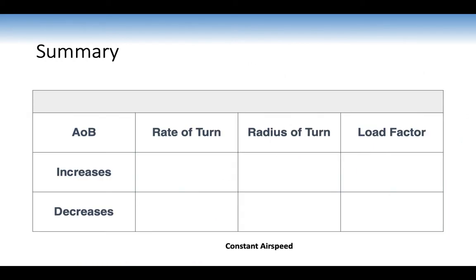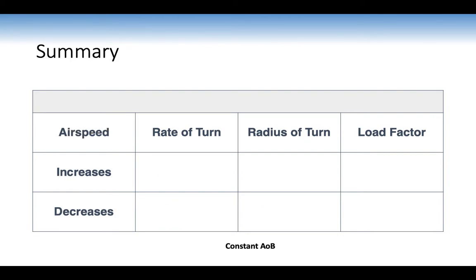Summary of turn performance: increasing angle of bank results in an increased rate of turn, decreased radius of turn, and increased load factor — all at constant airspeed. Decreasing angle of bank: rate decreases, radius increases, load factor decreases. For constant angle of bank with increased airspeed: rate of turn decreases, radius increases, load factor stays the same. Decreased airspeed: rate of turn increases, radius decreases, load factor stays the same.